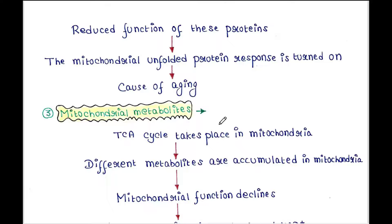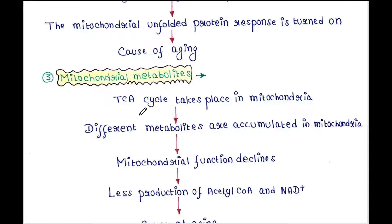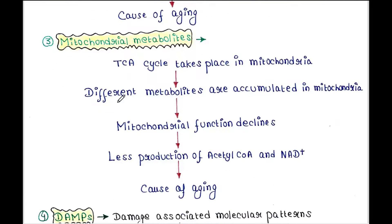Next is mitochondrial metabolites. We all know that the tricarboxylic acid cycle takes place in mitochondria, and different metabolites are accumulated there. When mitochondrial function declines, it leads to reduced production of acetyl-CoA and NAD+, and this is another reason of aging.